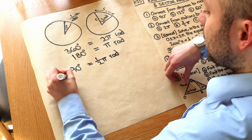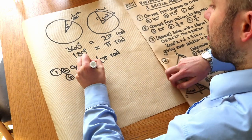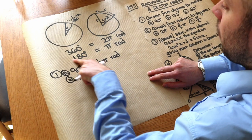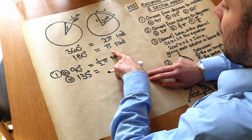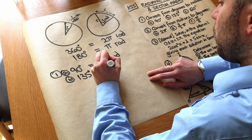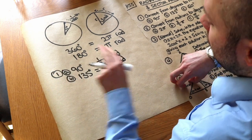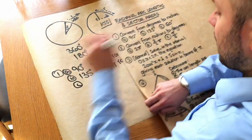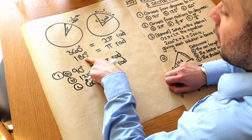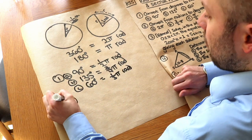For 135 degrees — again, think in fractions. 135 is three-quarters of 180, so we'd have three-quarters of π radians, which is 3π/4. The key method is: find what fraction of 180 you have, then take that fraction of π. For 60 degrees: 60 is a third of 180, so it's π/3.